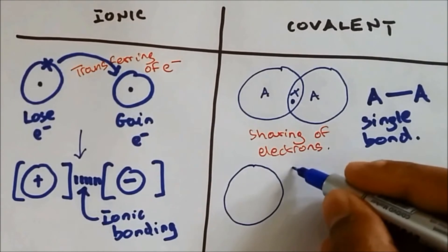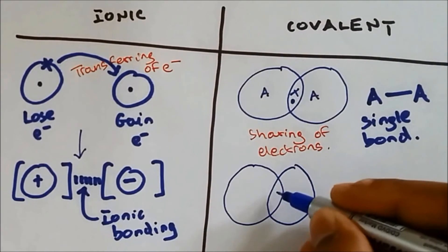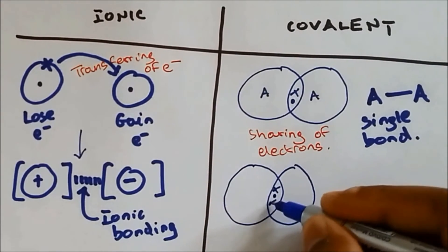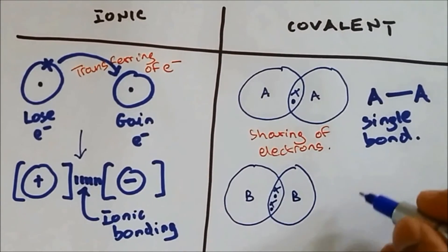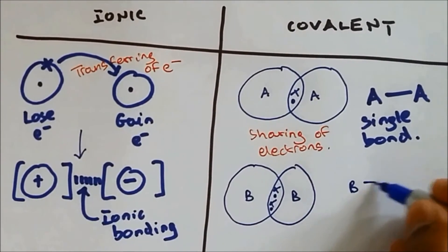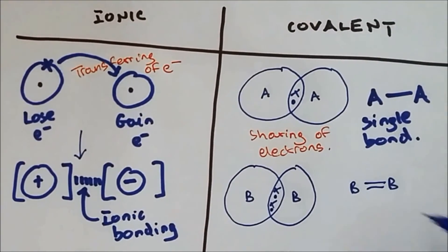For a double bond, two pairs of electrons would be found in the overlap. So a total number of four electrons and a double bond is represented with the double line.